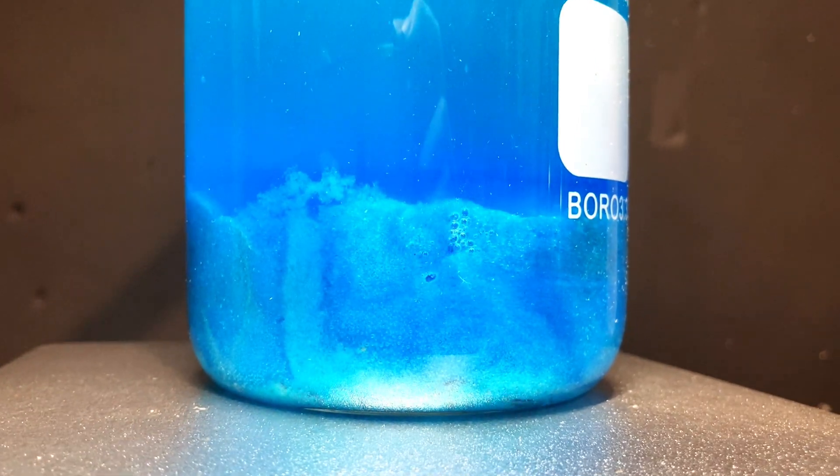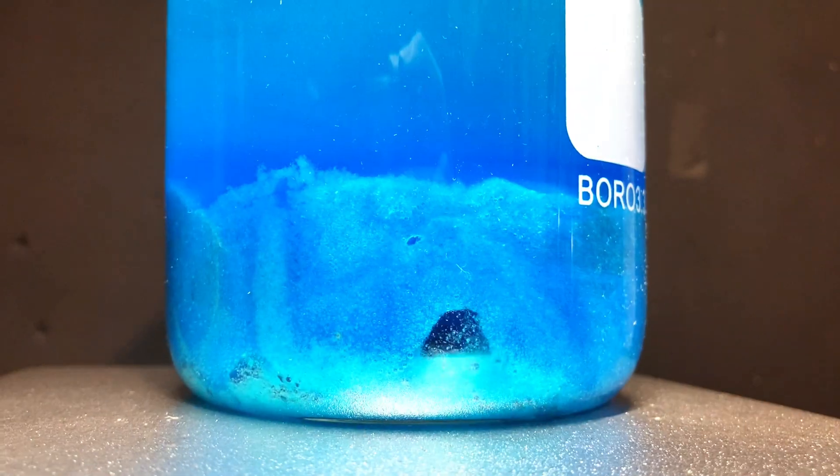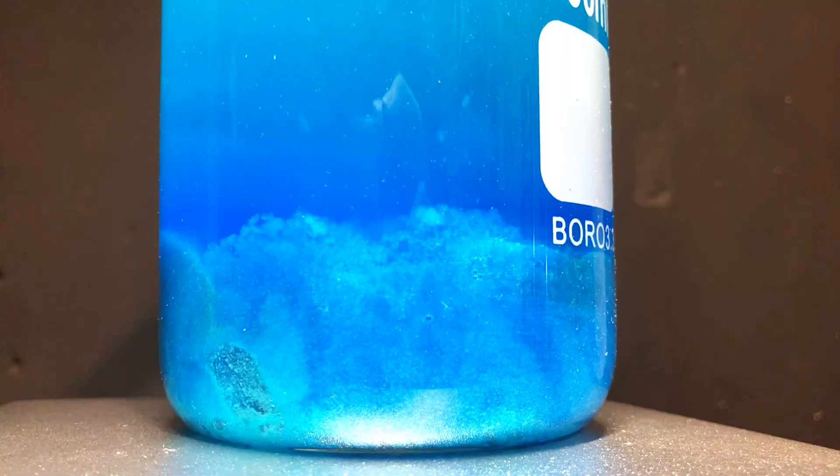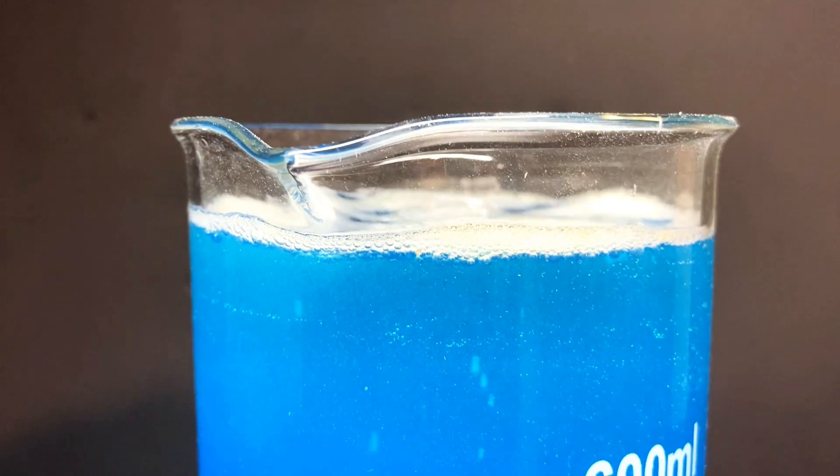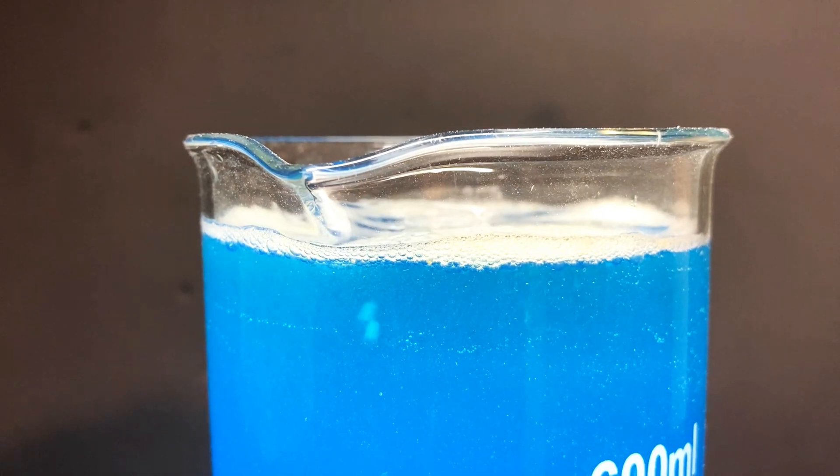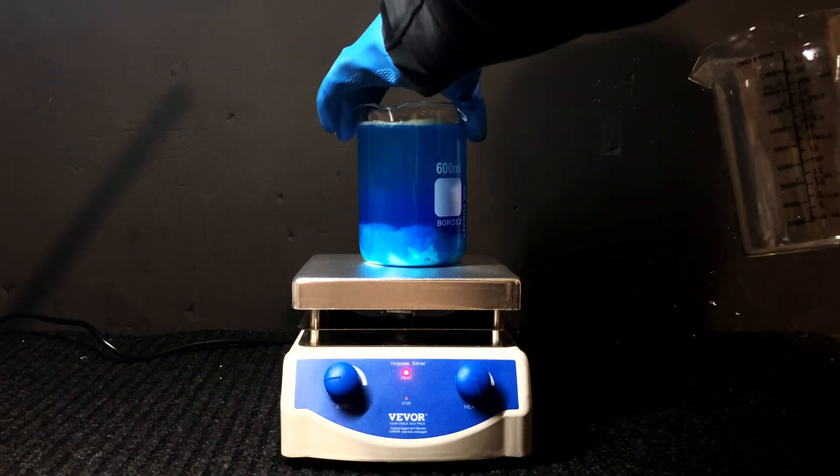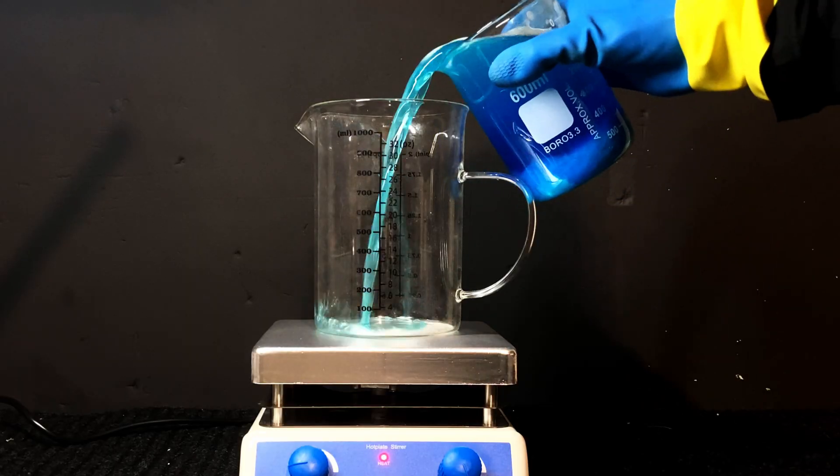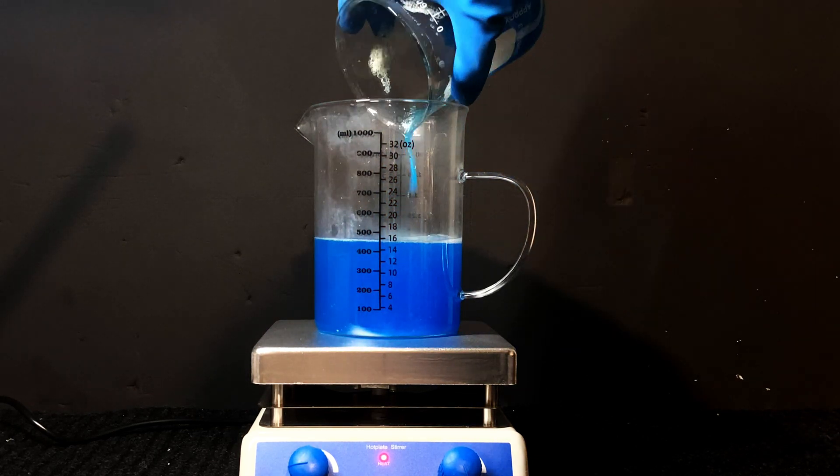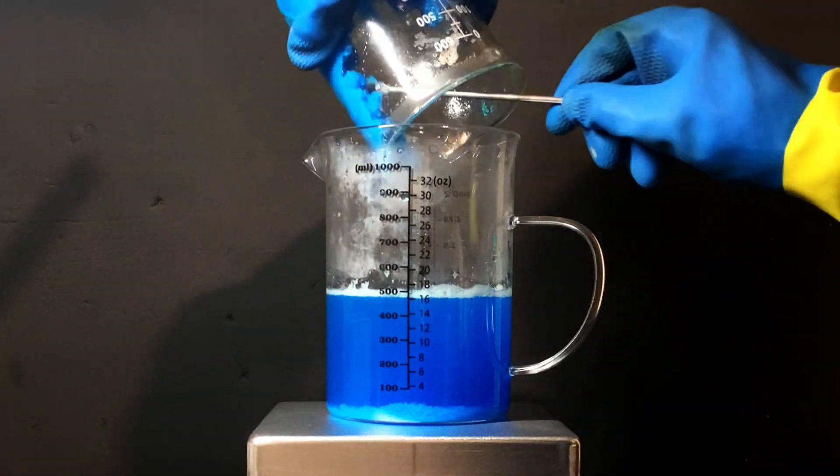As you can see here, it was taking forever to dissolve because all of it was just sitting at the bottom, and at the time when I filmed the video, I didn't know that the weird insoluble things were impurities. I thought I just somehow messed up my calculations and didn't add enough water. So what I did was add some more water, unfortunately making the solution unsaturated now. I transferred everything into a larger beaker and then rinsed the beaker with some more water to really make sure everything came over.